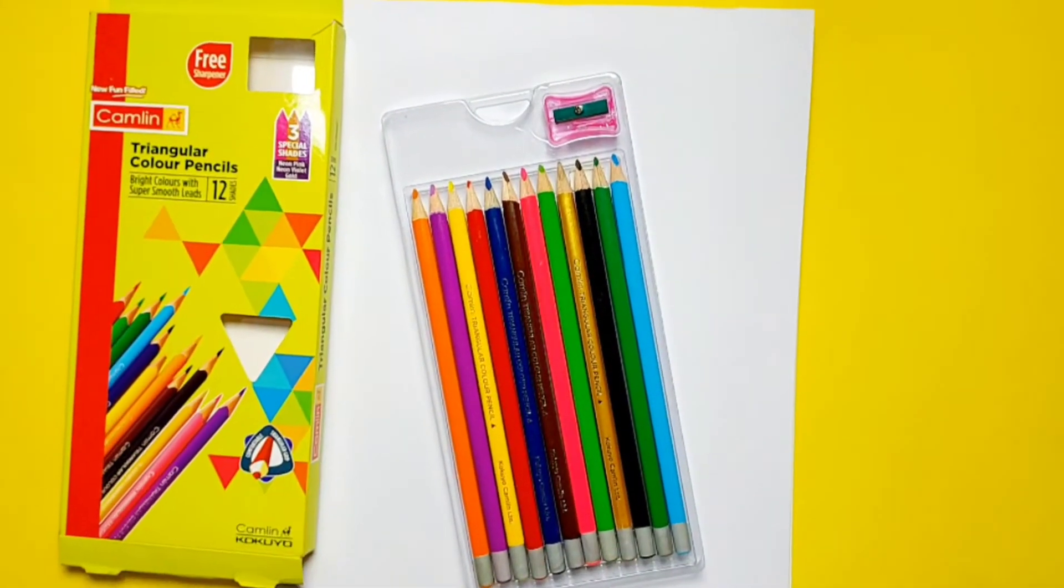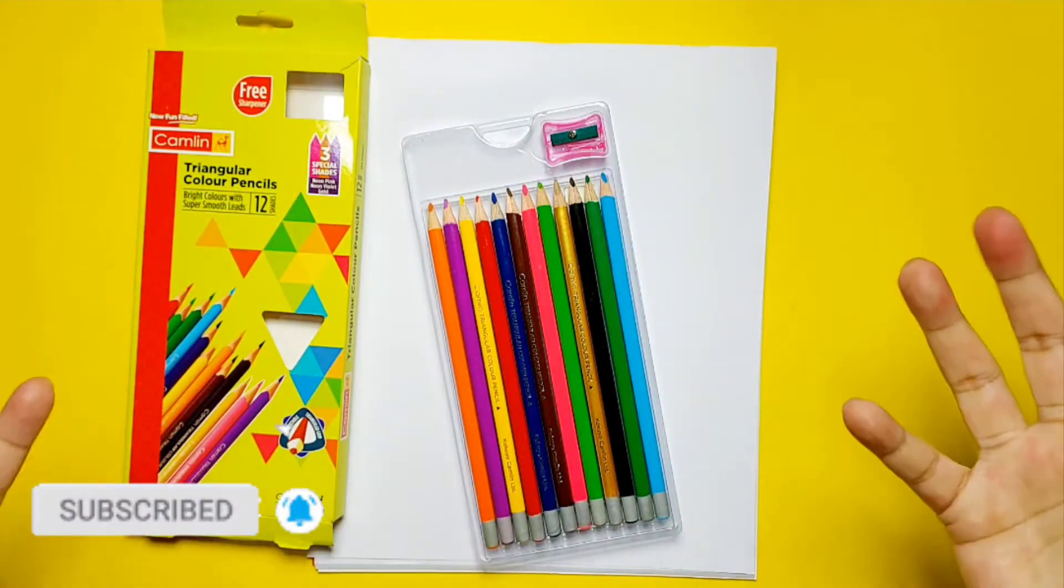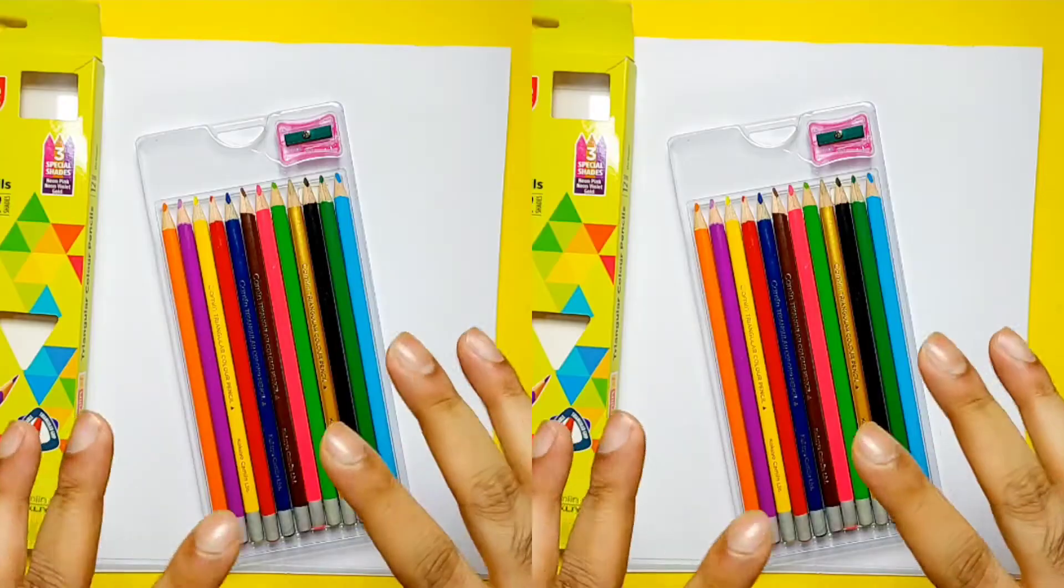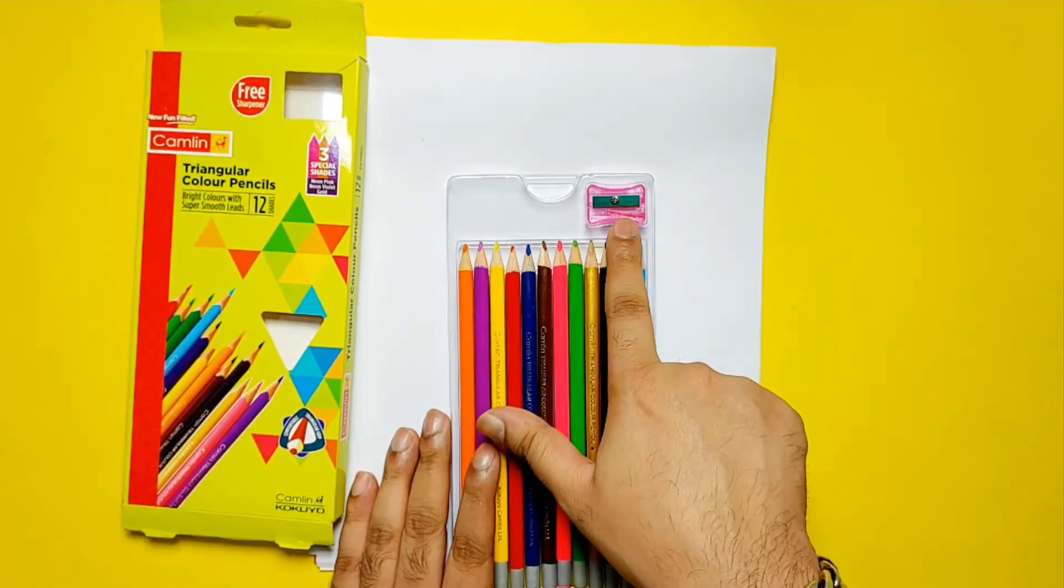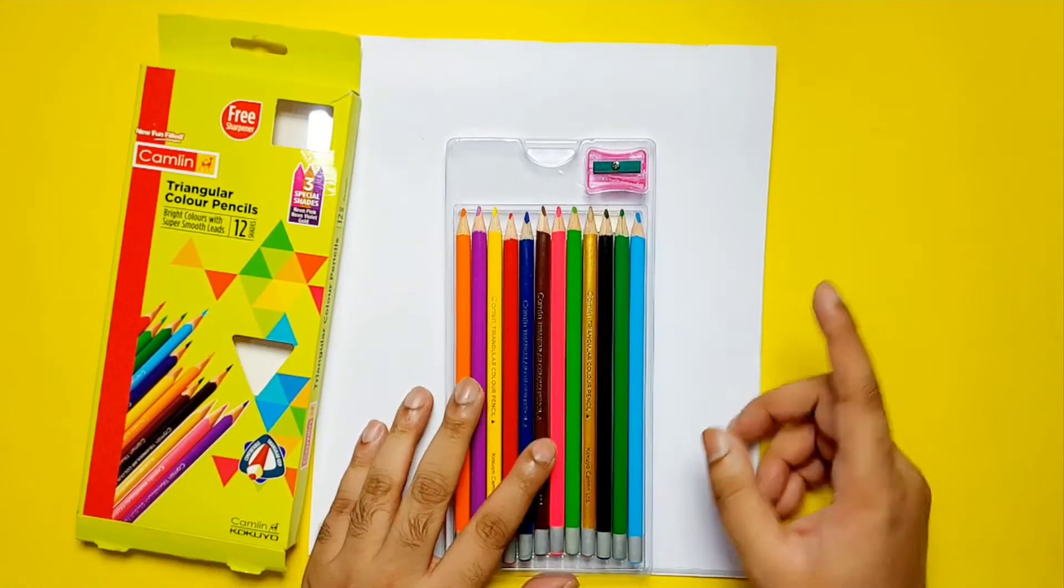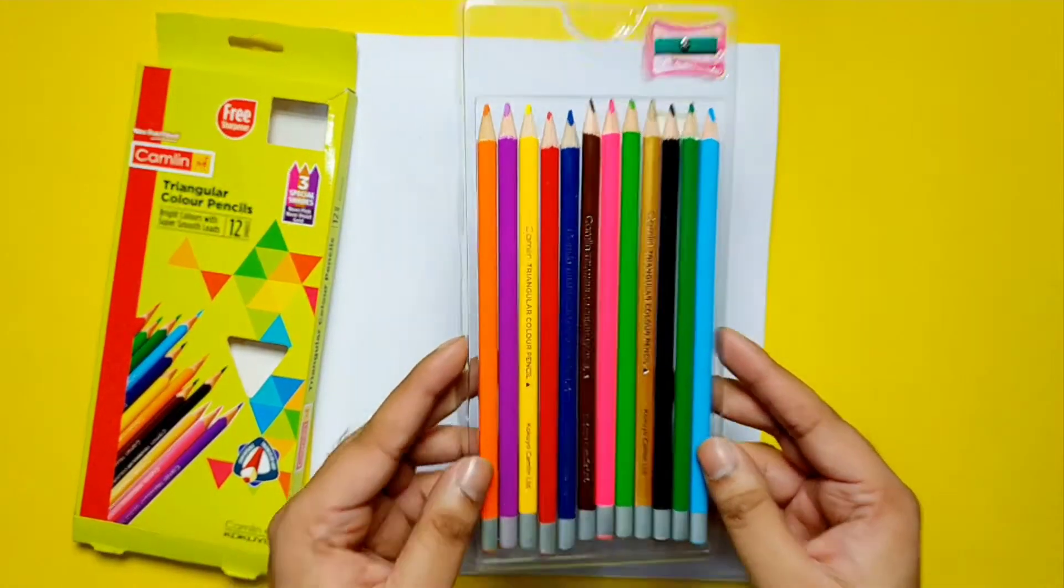So my first impression - I am looking at some colors. Very attractive. And those of us who are artists, we love the color. When I look at colors, it seems so colorful and the creativity comes in. As Camlin promised, there is a sharpener with it. In 12 shades, as you can see, some different shades: Orange, Purple, yellow, red, dark blue, brown, pink, green.